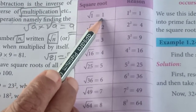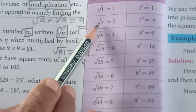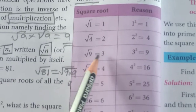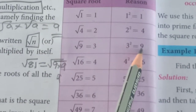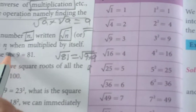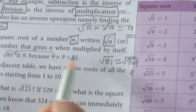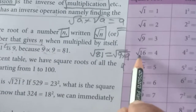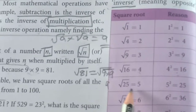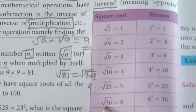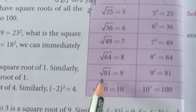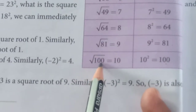Root 1 is 1. Root 4 is 2. Root 9 is 3, because 3 squared is 9 — 3 into 3 gives you 9. Here, 9 into 9 gives you 81. Root 16 is 4. Root 25 is 5. Root 36 is 6. Root 49 is 7. Root 64 is 8. Root 81 is 9. Root 100 is 10.